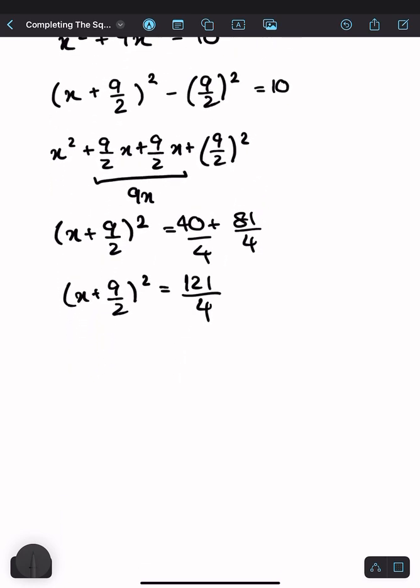right? So we want to get x on its own. First thing we can do is square root both sides since we're dealing with x squared up there. So x plus 9 over 2 equals plus minus. Don't forget that. Square root of 121 over 4. Subtract 9 over 2 from both sides.